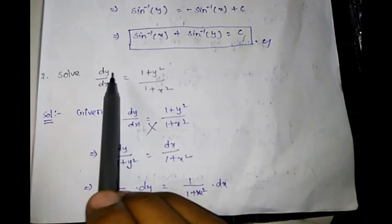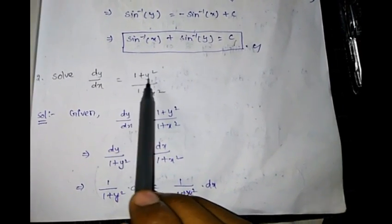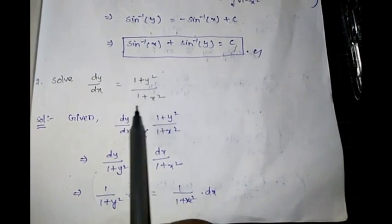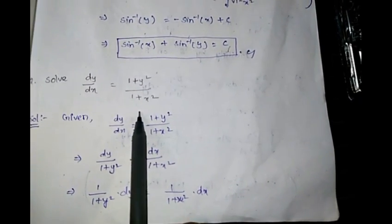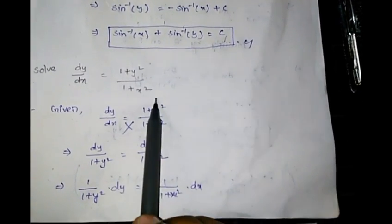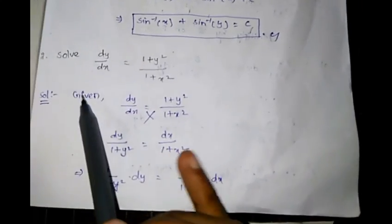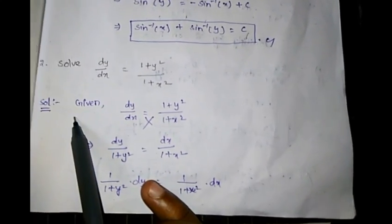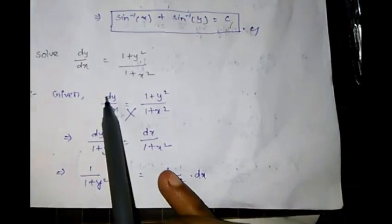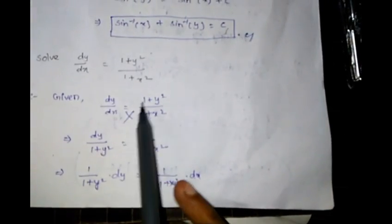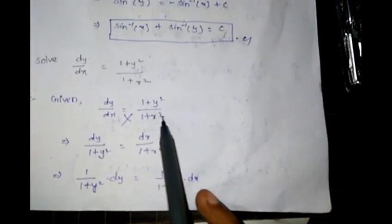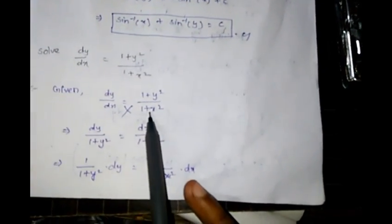Second problem: Solve dy/dx = (1+y²)/(1+x²). Given dy/dx = (1+y²)/(1+x²).